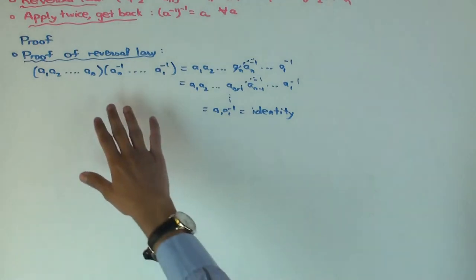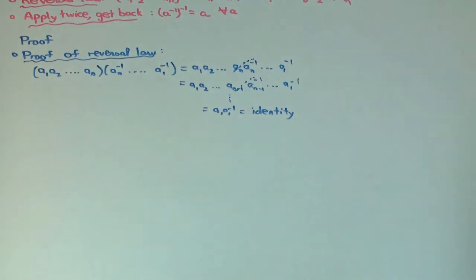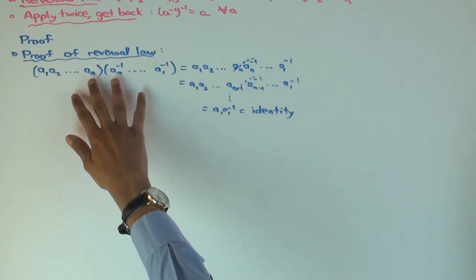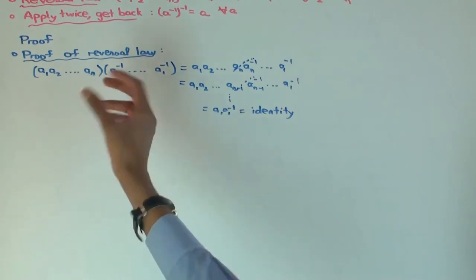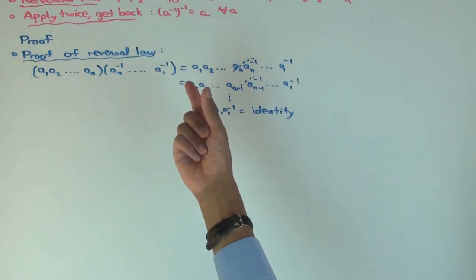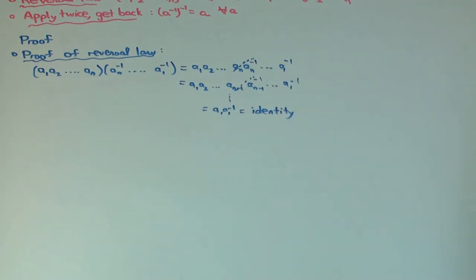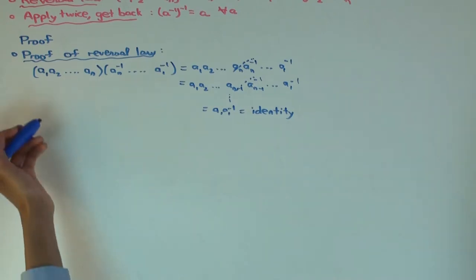And you see now, why was it important to write them in reverse order? Because it's not commutative. If you hadn't written them in reverse order, you wouldn't have been able to find something and its inverse next to each other. And that's what you need. You need something and its inverse next to each other, in order to be able to cancel them. Now, if you wanted to write the proof formally, you would do it by induction and all. But this is quite simple, so I'm not doing it that way.